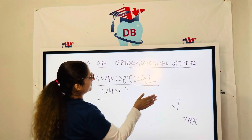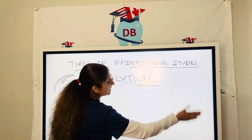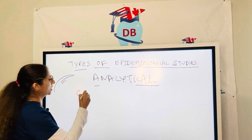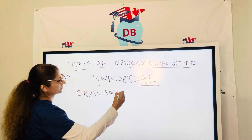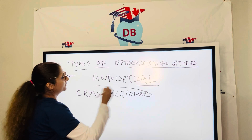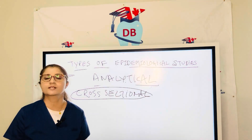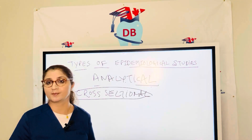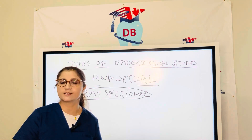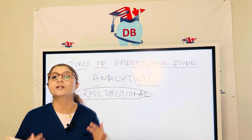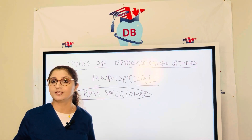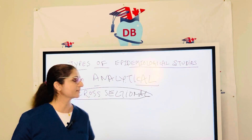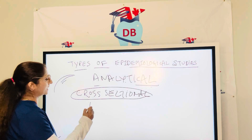First of all, when we talk about the cross-sectional study — in any of these analytical studies, whether it is cross-sectional, cohort, or case control, we always have two groups. One group is the study group or the experimental group, who is having the exposure and having the disease. The other group is the control group, not having the disease or not having the exposure. We always have the control group for comparison of our results.